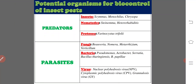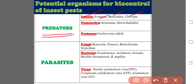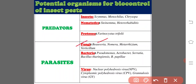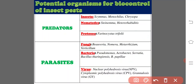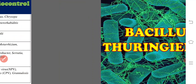Potential organisms for biocontrol of insect pests include: predatory insects (Chrysopa, Minocylus, Trisopa), nematodes (Steinernema, Heterorhabditis), protozoa (Nosema, Thelohania), parasitic fungi (Beauveria, Nomuraea, Metarhizium, Verticillium), bacteria (Pseudomonas, Aerobacter, Serratia, Bacillus thuringiensis, Bacillus papilliae), and viruses (nuclear polyhedrosis virus, cytoplasmic polyhedrosis virus, and granulosis virus).